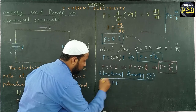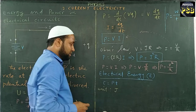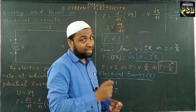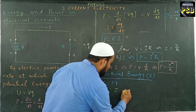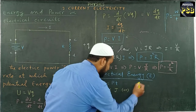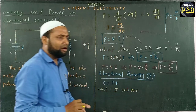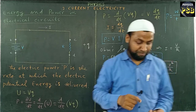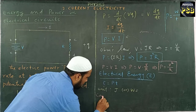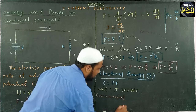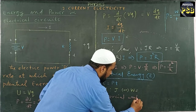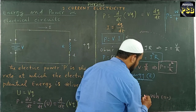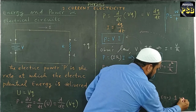The unit of electrical energy is Joules, represented by the letter J. We also know power is measured in watts and time is measured in seconds, so one more unit of electrical energy is watt-second. But what we use as the commercial unit is kilowatt-hour. The commercial unit of electric energy consumed by any device is kilowatt-hour, and it is also referred to as one unit of electrical energy.